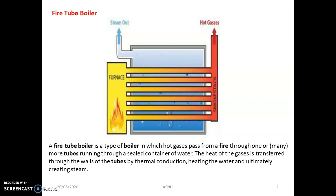Generally, in most cases, the fire tube boiler is mainly used in process industries, chemical plants, and pharmaceutical industries where the pressure requirement is less compared to a steam power plant. It is used in low capacity steam generation plants or processing and food-related industries.